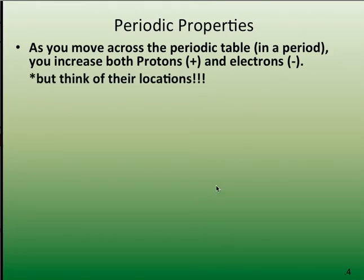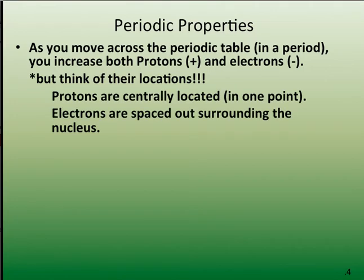Now, as you go across the periodic table in a period, that means from left to right, you increase both the protons and the electrons. But you've got to think about where are these things located? Remember, you're adding protons to the nucleus in the center. The electrons are spaced out in a huge space comparatively to where the nucleus is.